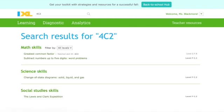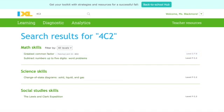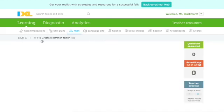And then you will see that you get some search results. So it gives you a few different things that could be the correct skill that I want you to work on. So if you ever get to a place that looks like this, you want to look for where it says matched skill ID. So it's matching you with this skill, 4C2. So this is what I want you to work on, greatest common factor. You would just click on this and then it would take you right to the skill.